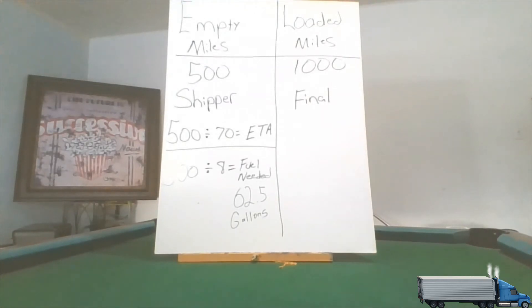You might have had a load that was only 300 miles or 200 miles, but the example I'm going to use is showing you how to do your ETA, estimated time of arrival. And if you're an independent contractor or owner operator, how to do the math to figure out how much fuel will be needed.